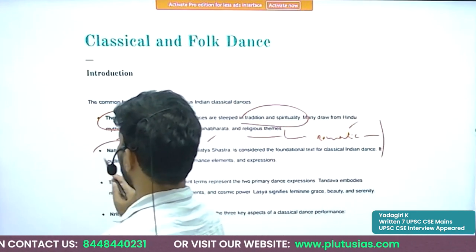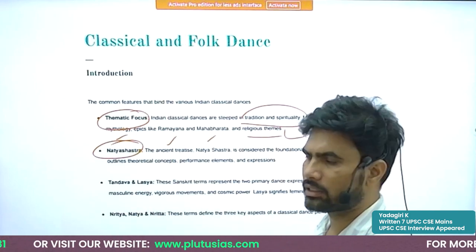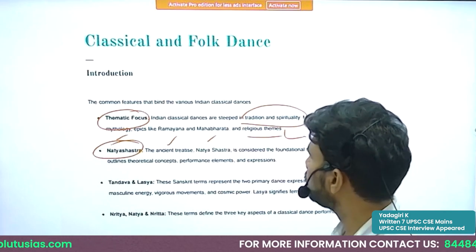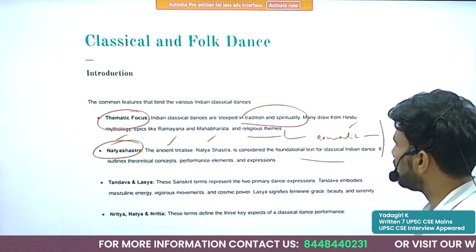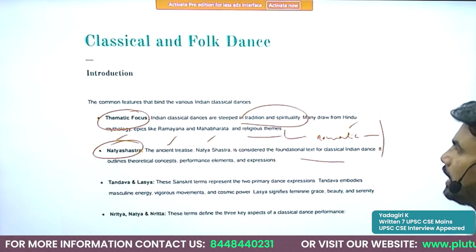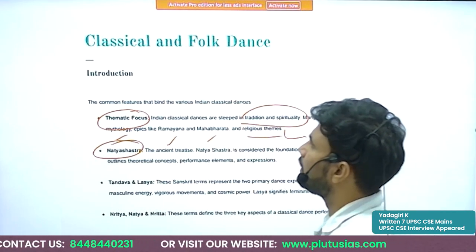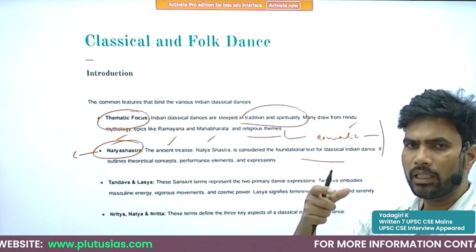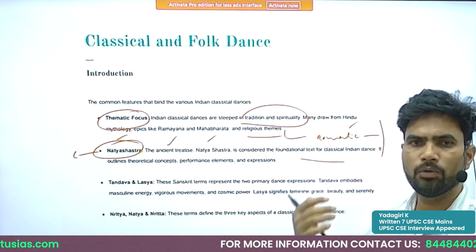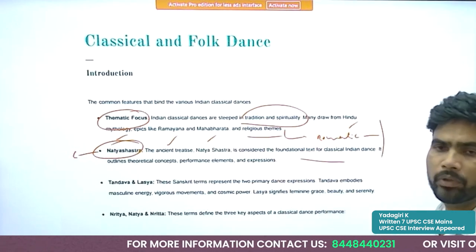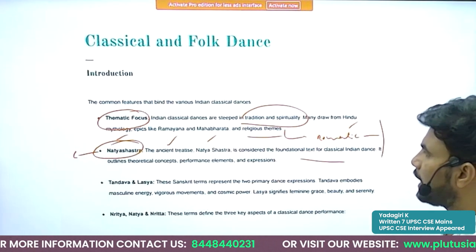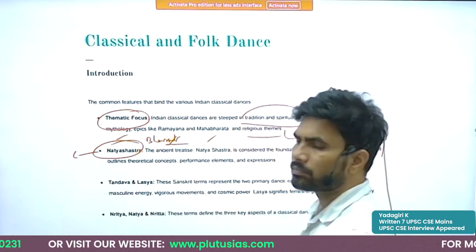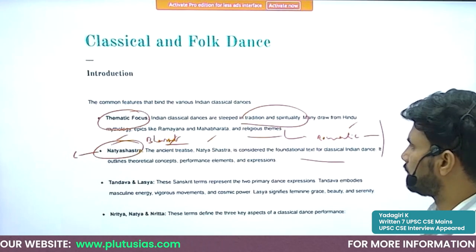The origin of classical dances can be traced to the Natyashastra, which is considered the foundational text for classical Indian dances. Not only for dances — the origin of classical music can also be traced from Natyashastra. It was written by Bharata, so it is known as Bharata's Natyashastra.